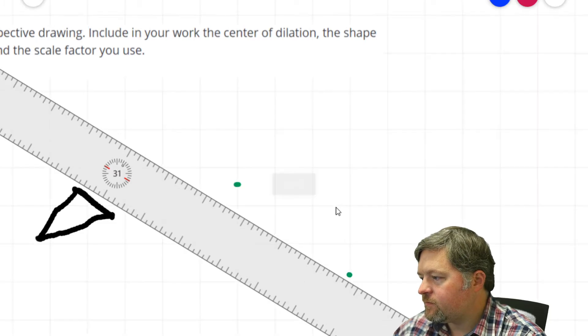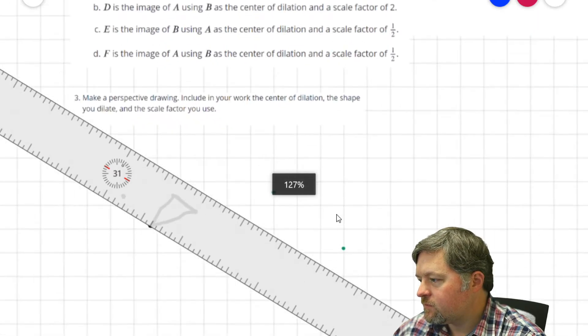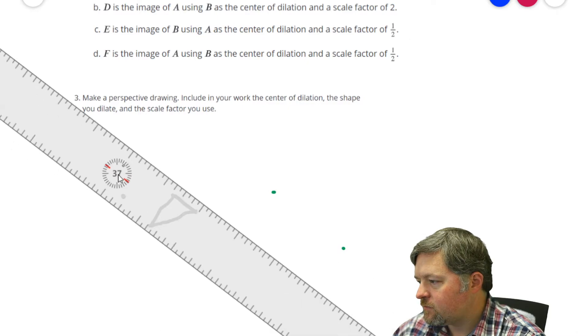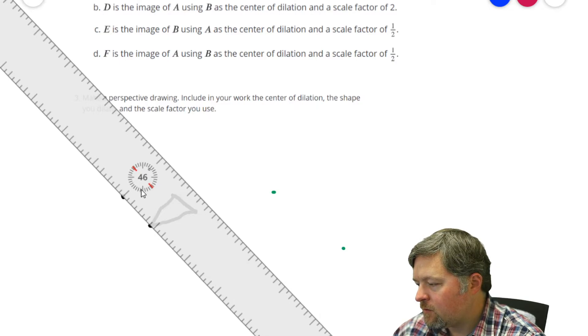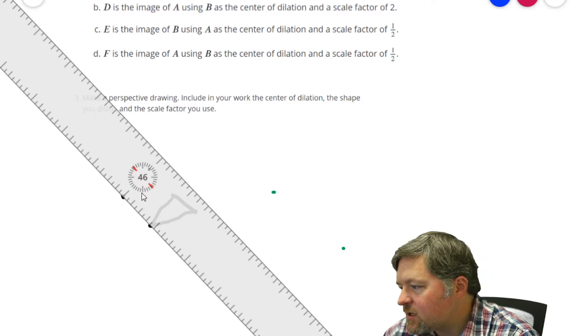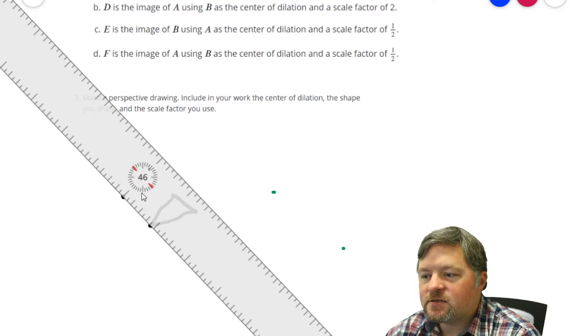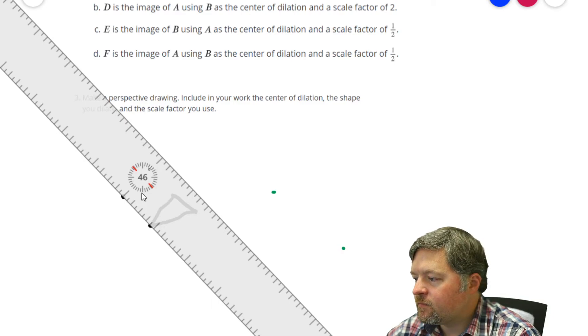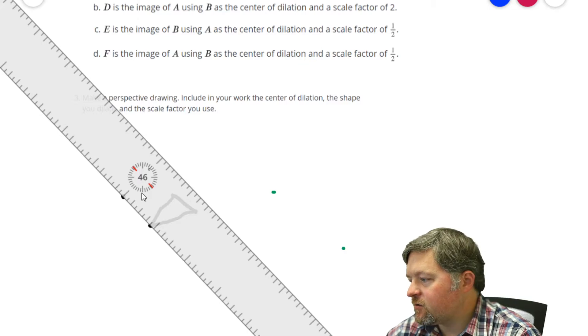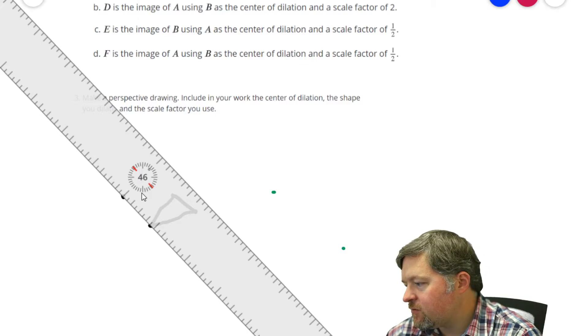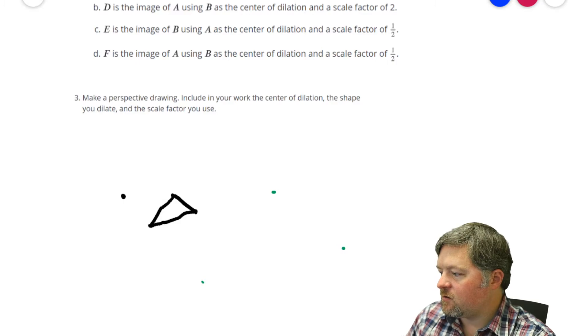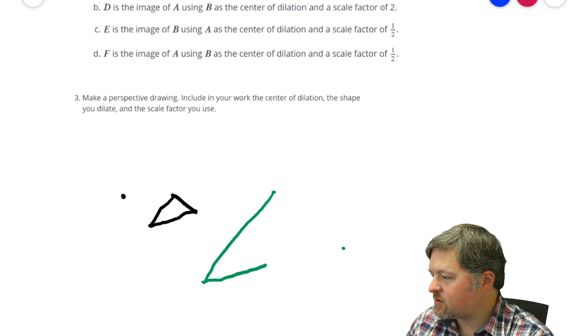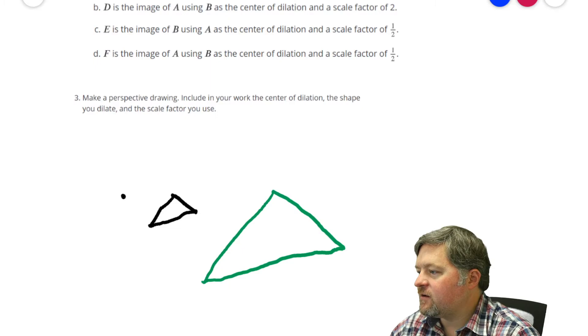And now I have... Okay, this point, it looks like it's seven-eighths. Seven-eighths times three is twenty-one-eighths, which should be right there. Turn off my ruler. Connect my dots. And I created a scale perspective drawing.